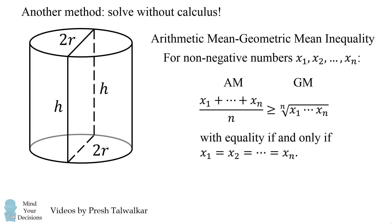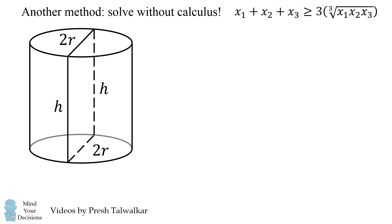Now, sometimes it helps to multiply both sides by n. We have the sum of n numbers is greater than or equal to n times the nth root of the product of those numbers. In this video, we're going to deal with n is equal to 3. So, we have the sum of three variables being greater than or equal to 3 times the cube root of the product of those variables, with equality if and only if all variables are equal to each other. What are the three variables we're going to use?